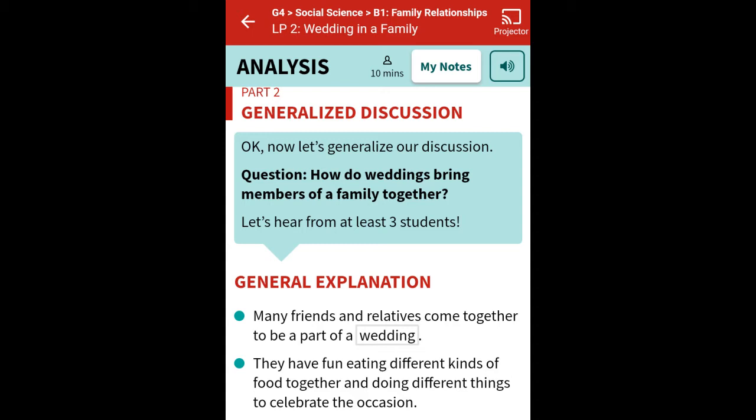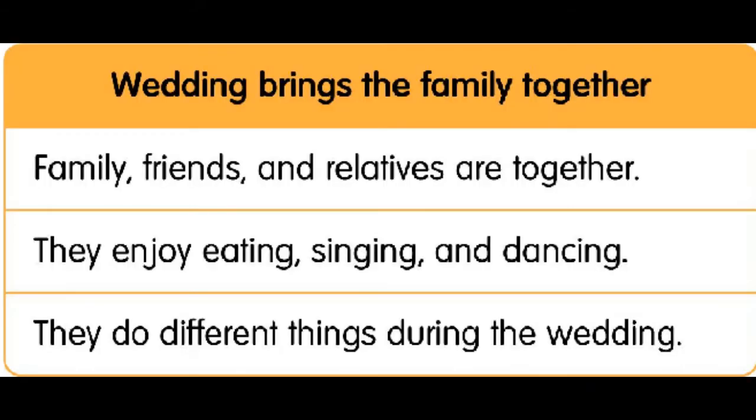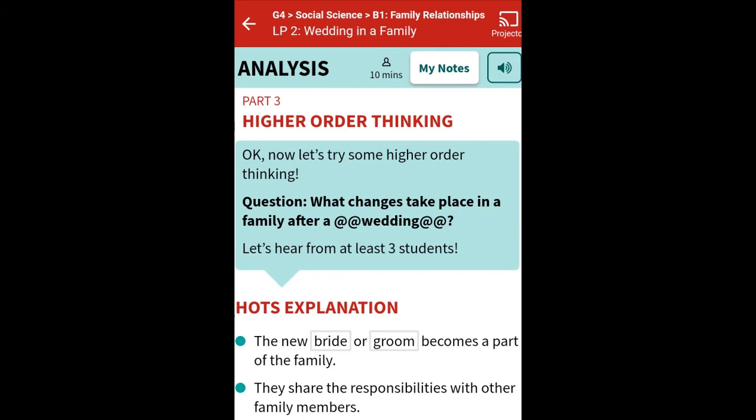A wedding brings the family together — family, friends, and relatives are together; they enjoy eating, singing, and dancing. They have different responsibilities during the wedding. Family members, and specially friends, are also given responsibilities — various different types of responsibilities are assigned to each and every family member. What changes take place in a family after a wedding? Have you ever noticed what changes take place in the two families? The new bride or groom becomes a part of the family.